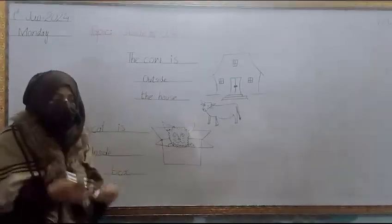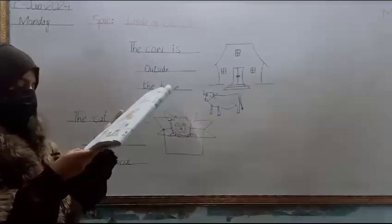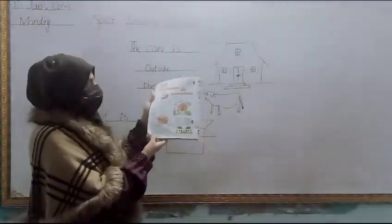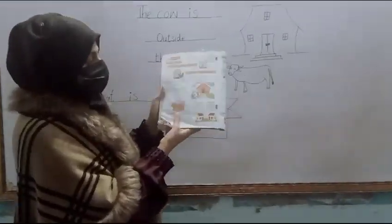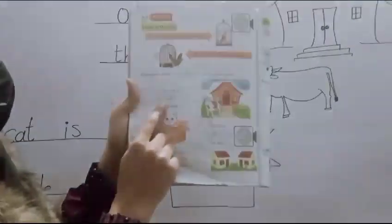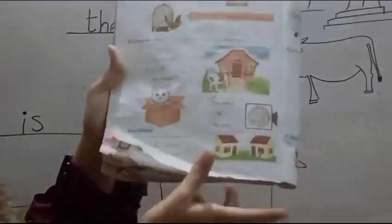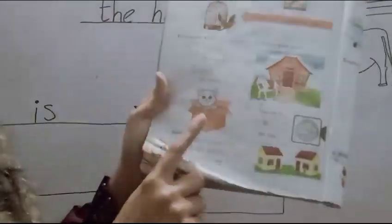अगर बाहर होगी तो वो outside होगा. जैसे कि मारे पास बुक है? Inside or outside. देखे, को अगर से inside or outside होगी? Outside. तो इधर हम क्या रिखेंगे? The cow is outside the house. And मारे पास cat. The cat is inside or outside होगी? Inside. Inside the box. साथ बच्ची गर्मी इस बुक पे लिखेंगे और साथ मिक्स की रीडिंग करेंगे.